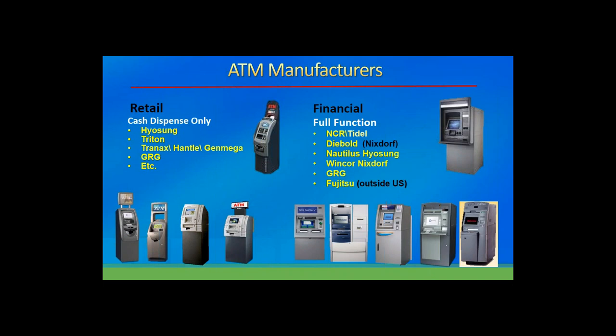Just like the business, manufacturers can be split in half. Looking at retail machines — those $2,000 to $5,000 ATMs you see everywhere — that industry was led for the longest time by Triton. In the last few years, Nautilus Hyosung has come to market and is now the number one provider of retail ATMs by far. There are a few others — Tranax, Hantle, Genmega, and GRG from China — but much of that market share belongs to Nautilus Hyosung and Triton.